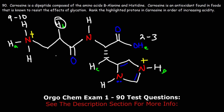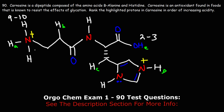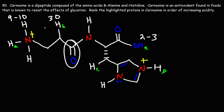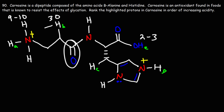The alpha proton adjacent to the carbonyl group of an amide has a pKa of about 30. If this were a ketone it would be around 19, if it were an ester it would be around 25, but for an amide the alpha hydrogen — one carbon away from the carbonyl group — has a pKa of 30.